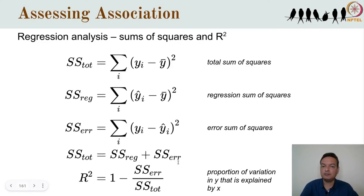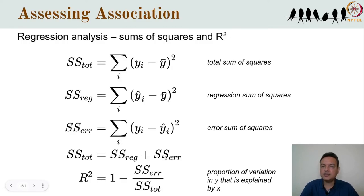Dividing the regression sum of squares by the total sum of squares gives the fraction of variation explained. Rearranging: this quantity equals 1 minus (error sum of squares / total sum of squares). This is called the coefficient of determination or r-squared. It ranges from 0 to 1. If there is absolutely no relationship between y and x, the slope is 0 and r-squared is 0. If all values of y fall exactly on the regression line, the error sum of squares is 0 and r-squared is 1. So r-squared can be interpreted as the proportion of variation in y explained by x. As a small aside, r-squared is actually just the square of the correlation coefficient R.